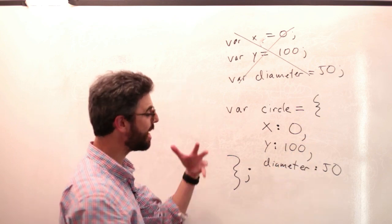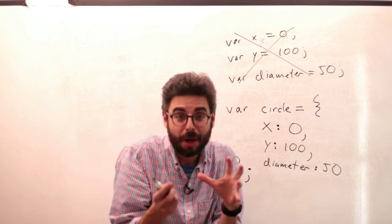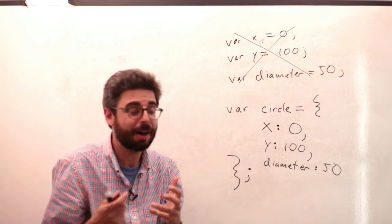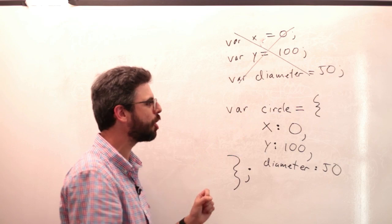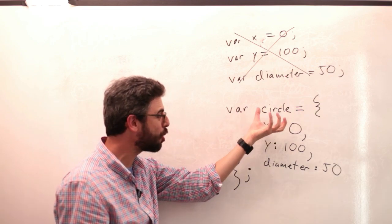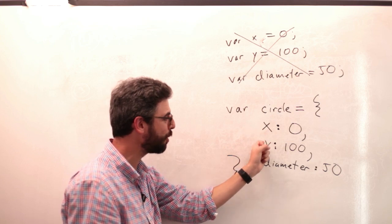So you can see that just like function setup was a block of code with a beginning and an end, function draw is a block of code with a beginning and an end. This variable circle now has a block of code with a beginning and an end. And circle is a container for these three variables.